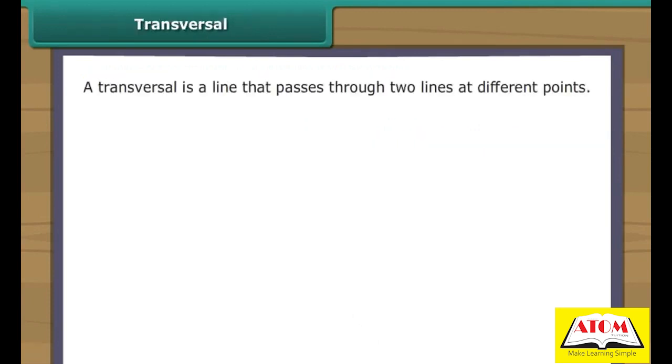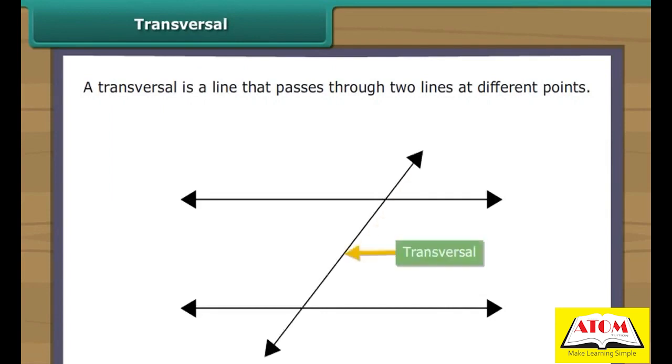Transversal. A transversal is a line that passes through two lines at different points. Mostly, a transversal produces several angles.